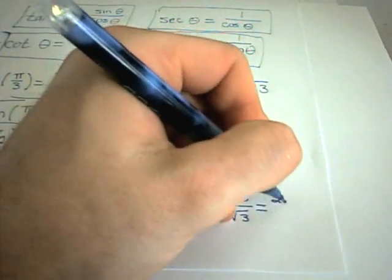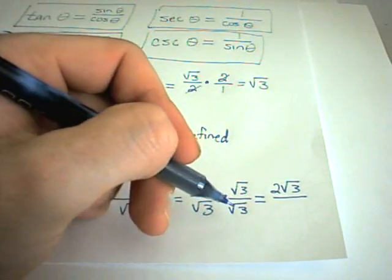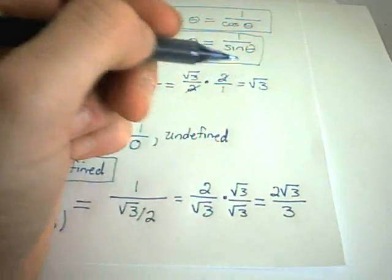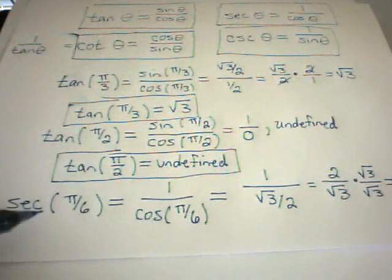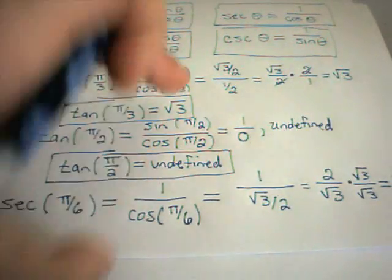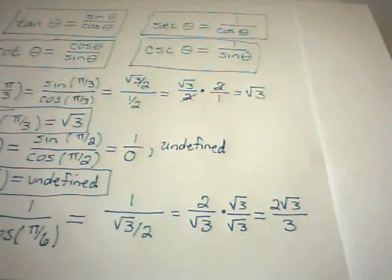We can multiply top and bottom by square root of 3. On top, you'll simply get 2 square root of 3. And square root of 3 times square root of 3 is simply 3. So we've now shown that secant of pi over 6 is equal to the value 2 square root of 3 over 3.